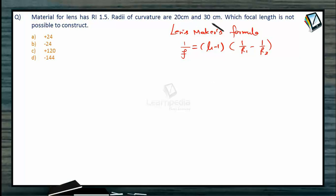So here two radius of curvature are given. So possibilities are there for both convex, one convex one concave and the reverse, and both concave. So these are the four possibilities.